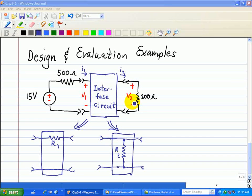Then we're asked to evaluate the two designs in terms of power loss in the interface circuit. Now let's take a look if the 15 volt source here, in series with this 500 ohm, is connected directly to the 200 ohm load.